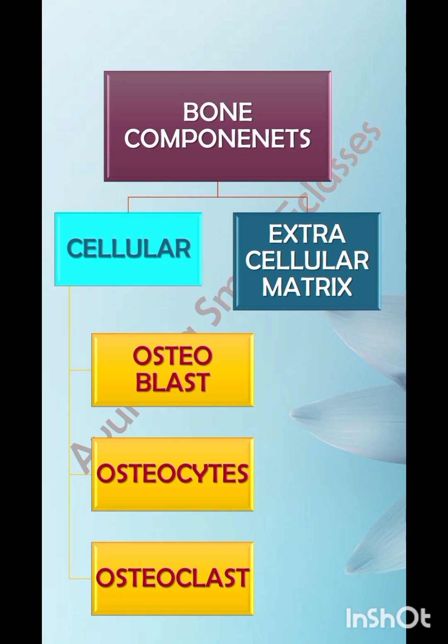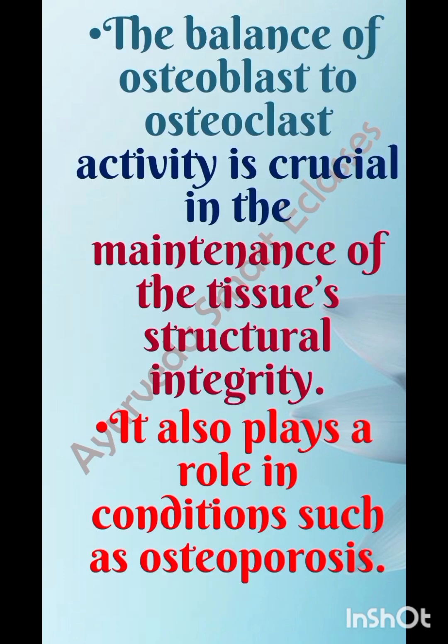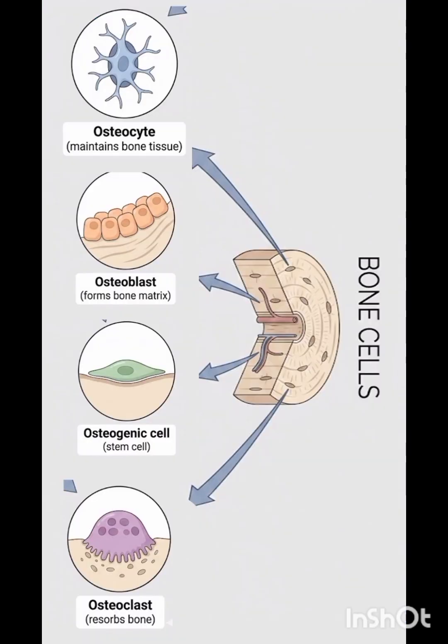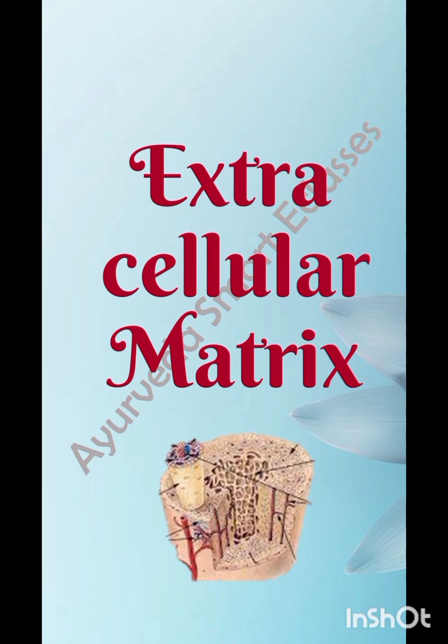In summary, the bone components are broadly classified into cellular and extracellular matrix. The cellular components are osteoblasts, osteocytes, and osteoclasts. The balance between osteoblast and osteoclast activity is crucial in maintaining tissue structural integrity and plays a role in conditions such as osteoporosis. The four types of bone cells are osteocytes, osteoblasts, osteogenic cells, and osteoclasts.